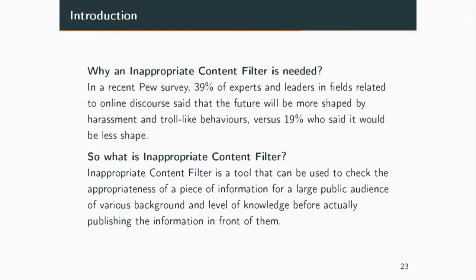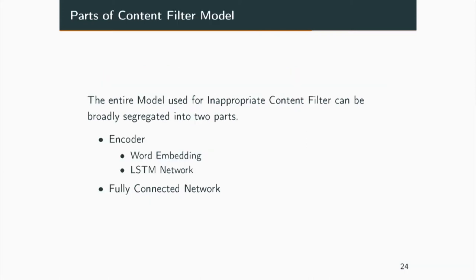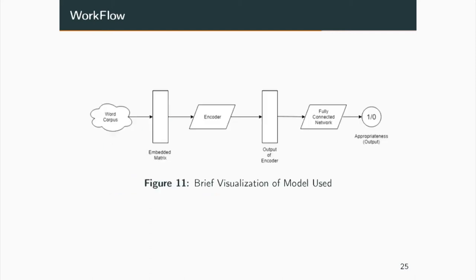What is an inappropriate content filter? It is a tool that checks the appropriateness of a piece of information for a large public audience. The filter we built can be broadly segregated into two parts: the encoder and the fully connected network. The encoder is further divided into word embedding and the LSTM network. Data flows through the model and finally it outputs a single number — either 0 or 1.